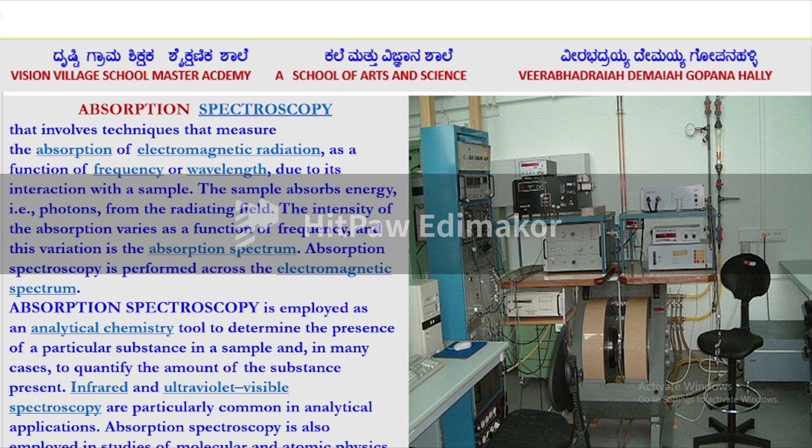It is employed as an analytical chemistry tool to determine the presence of a particular substance in a sample, and in many cases to quantify the amount of substance present. Infrared and ultraviolet-visible spectroscopy are particularly common in analytical applications.